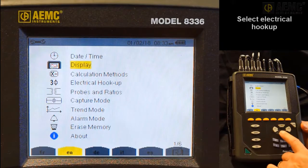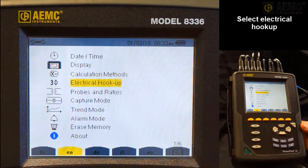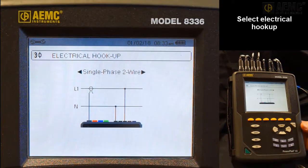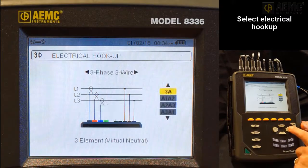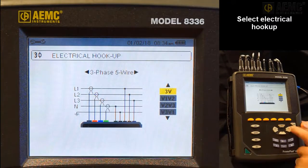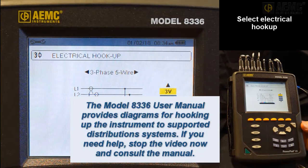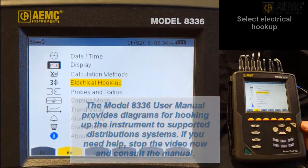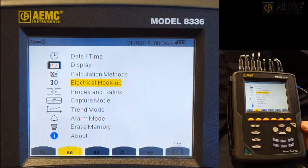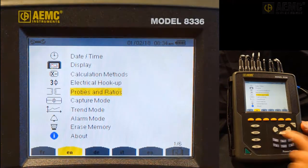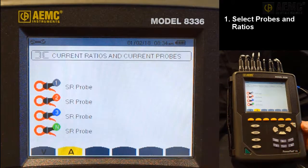Use the arrows to navigate to and highlight electrical hookup, then press Enter. In our example, we will connect to a simulation of a three-phase, five-wire hookup, so we will select this option and then press Enter. You are now returned to the configuration options screen. Use the arrows to navigate to probes and ratios, and press Enter.